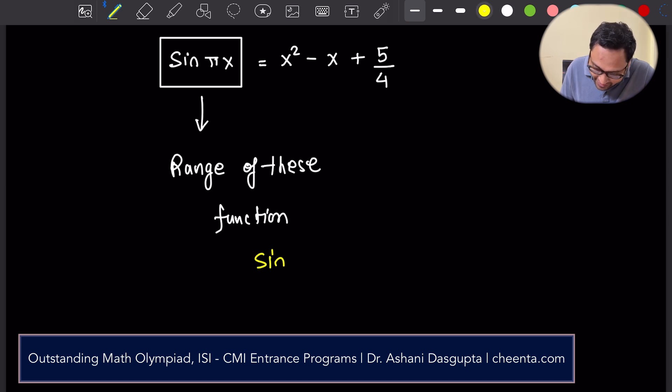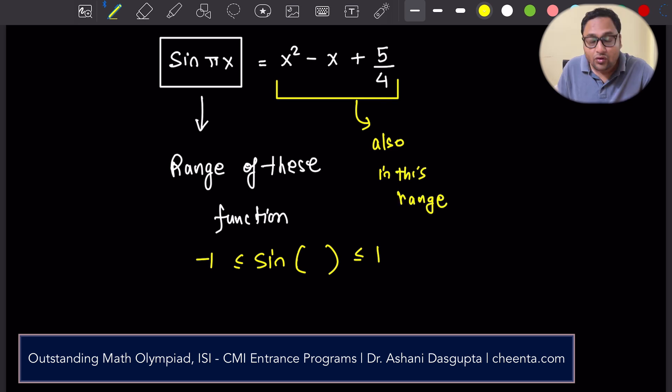Sine of anything is between minus 1 and plus 1. So whenever the right hand side is also in this range, also in this range, we will have a possibility of a solution. So let's analyze the right hand side a little bit more carefully.